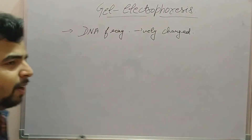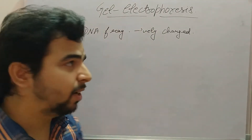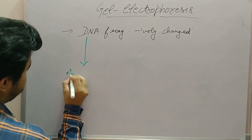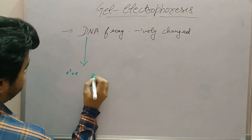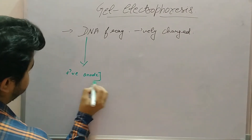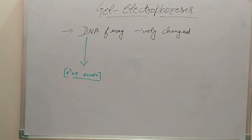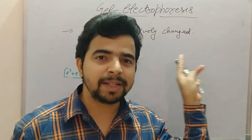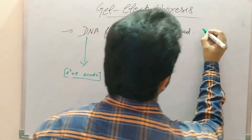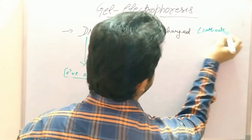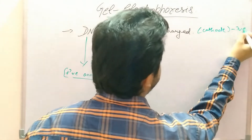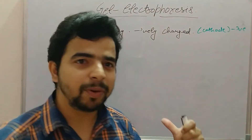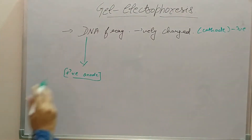When we pass electric current, the negatively charged DNA will move towards the positive charge, or anode. DNA segments are placed at the cathode point, which is negatively charged, and while passing electric current, they move towards the positive charge.